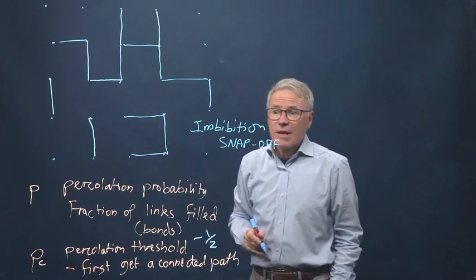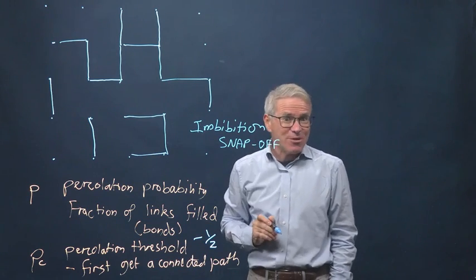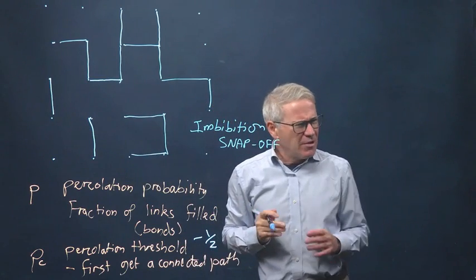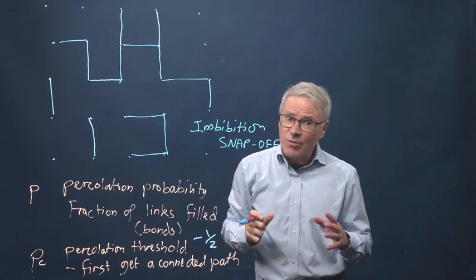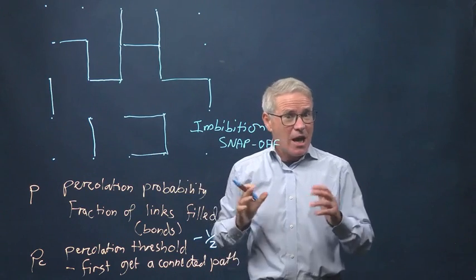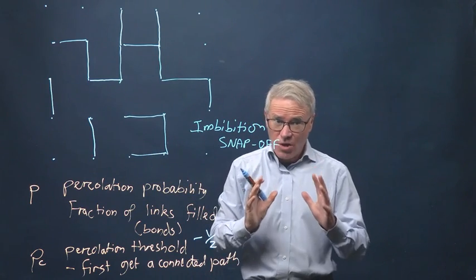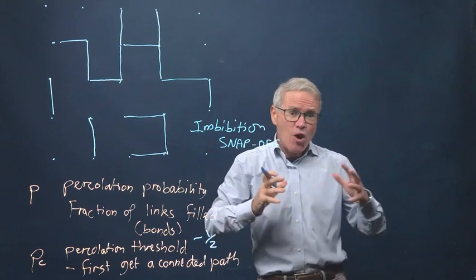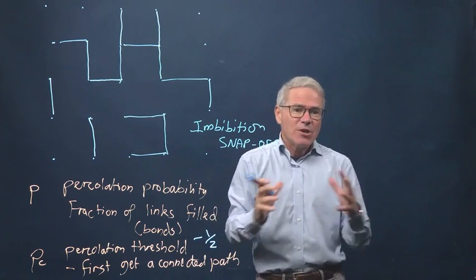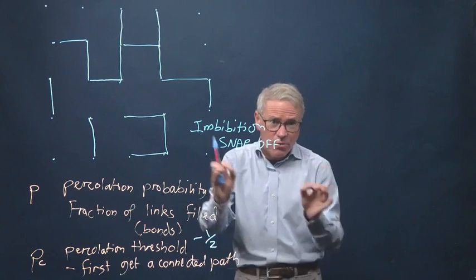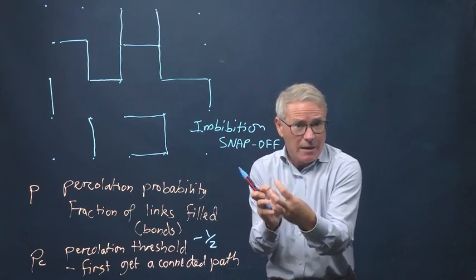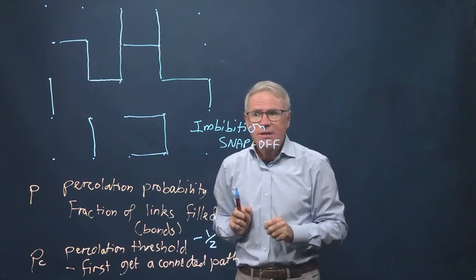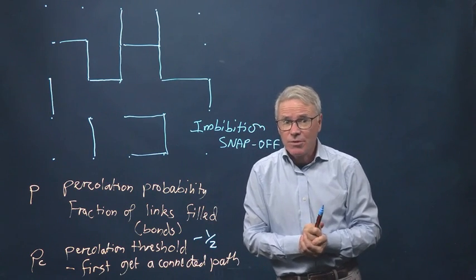So an imbibition process is where the blue represents water that fills throats. Now, of course, you might say, but you don't fill them randomly. You fill them in order of size. You fill the smallest first, then the next smallest, and so on. That's correct. But if you have a statistically homogeneous rock, by which I mean there's a distribution of throats and they're all different sizes, but you don't have all the small ones clumped in one place and all the big ones, they're randomly distributed in space, then this is indeed a percolation type process.